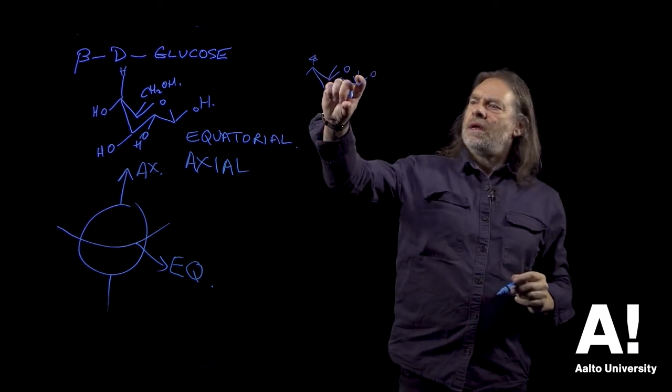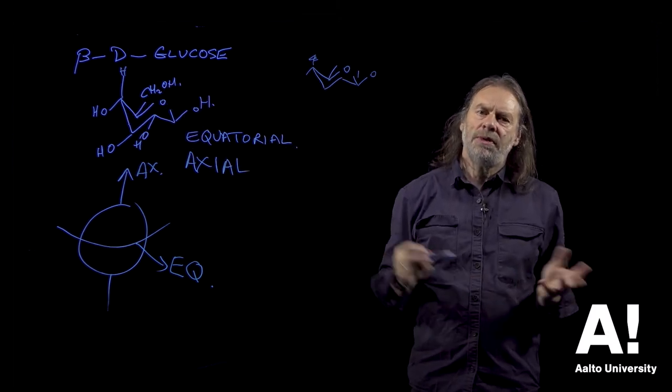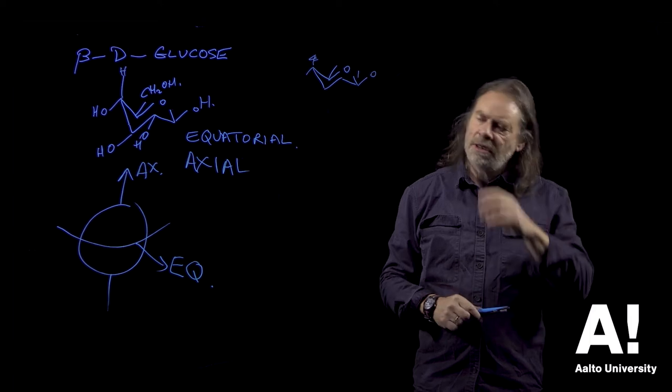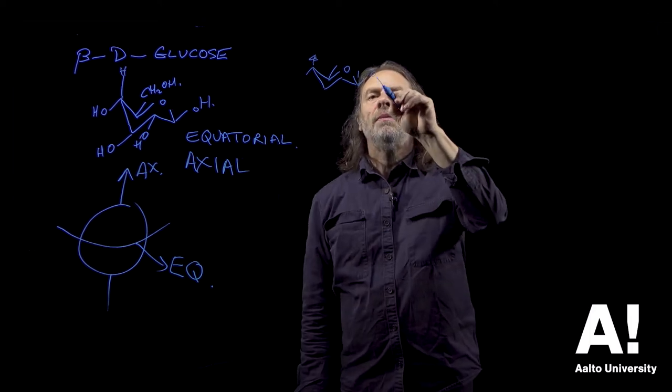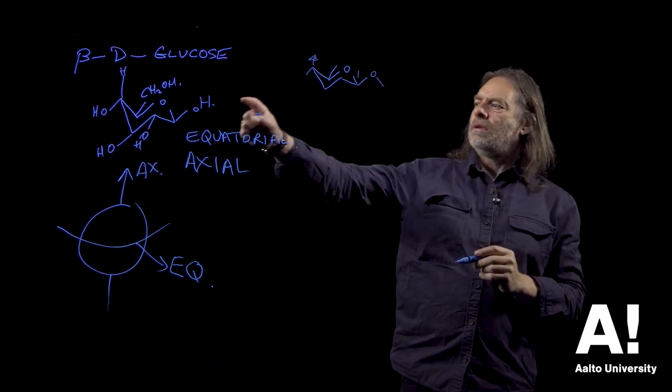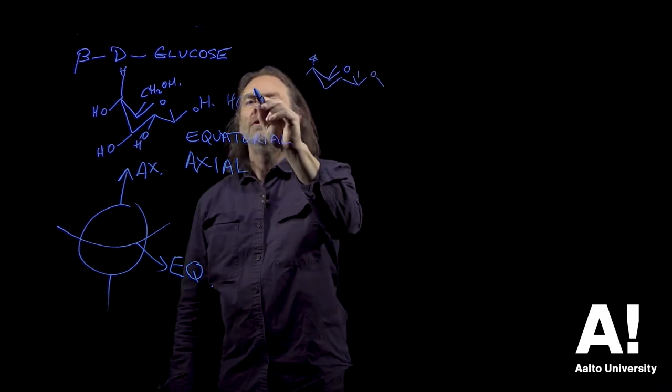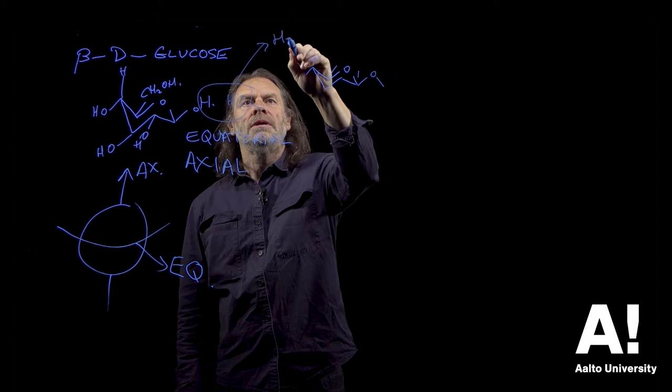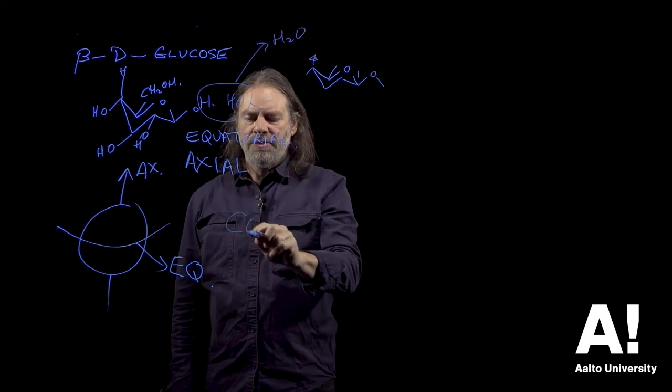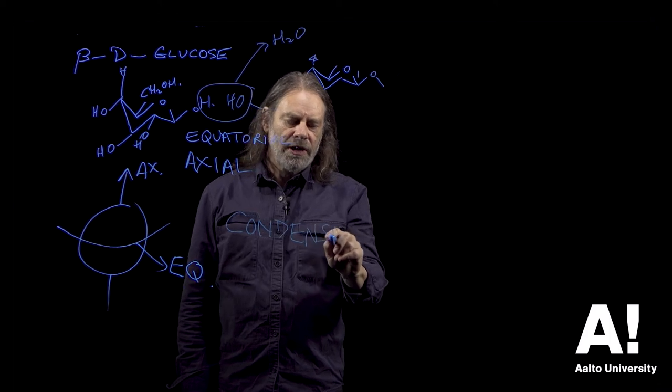When a glucose molecule is joined to another glucose molecule by the enzyme that creates the cellulose macromolecule, we end up with this hydroxyl and the hydroxyl of the adjacent glucose molecule losing a molecule of water. And that type of reaction is called a condensation reaction.